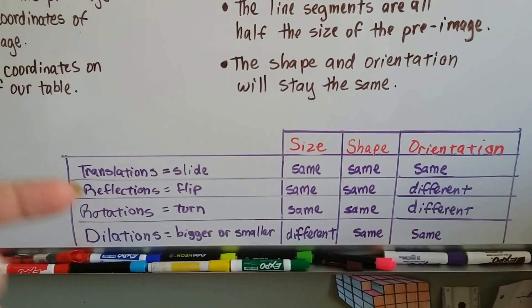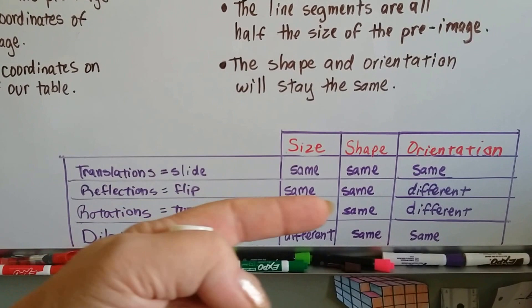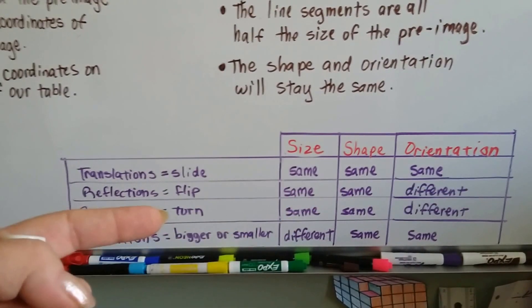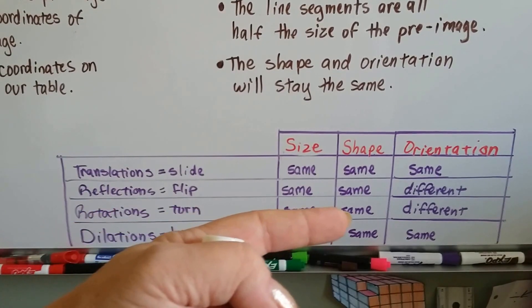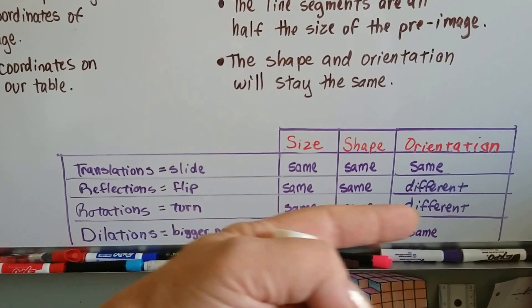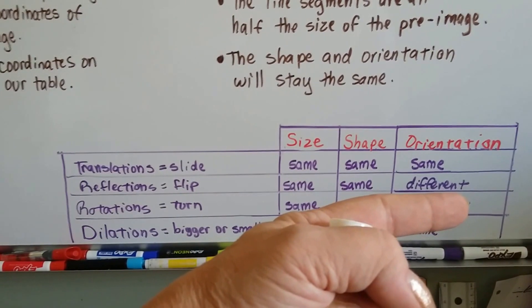Remember, the translations were sliding. The size, shape, and orientation stayed the same. The reflections flipped like a mirror image, didn't they? And the size and shape were the same, but the orientation changed because it flipped.